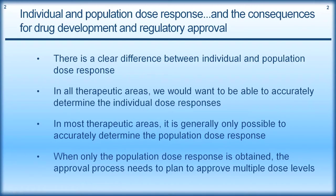There is a clear difference between individual and population dose response, and in this tutorial we're going to discuss what that means. In all therapeutic areas, we would want to accurately determine the individual dose responses. However, in most therapeutic areas, it is generally only possible to accurately determine the population dose response. When only the population dose response is obtained, the approval process needs to plan to approve multiple dose levels.